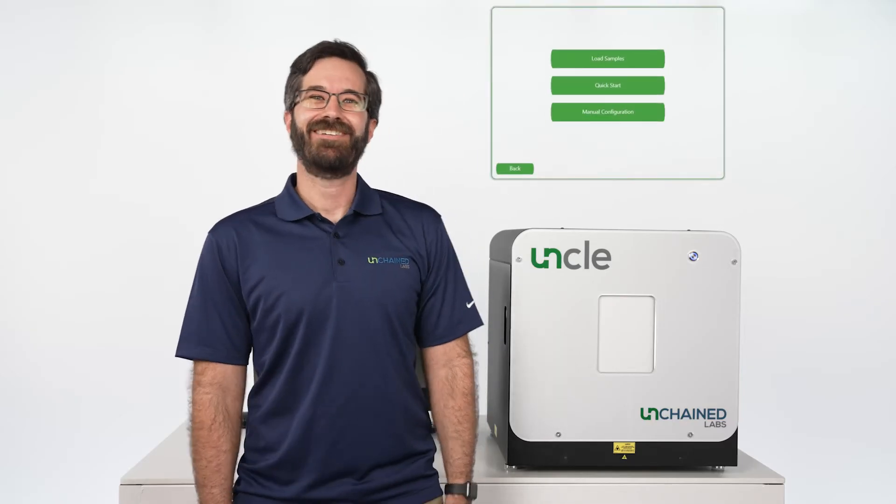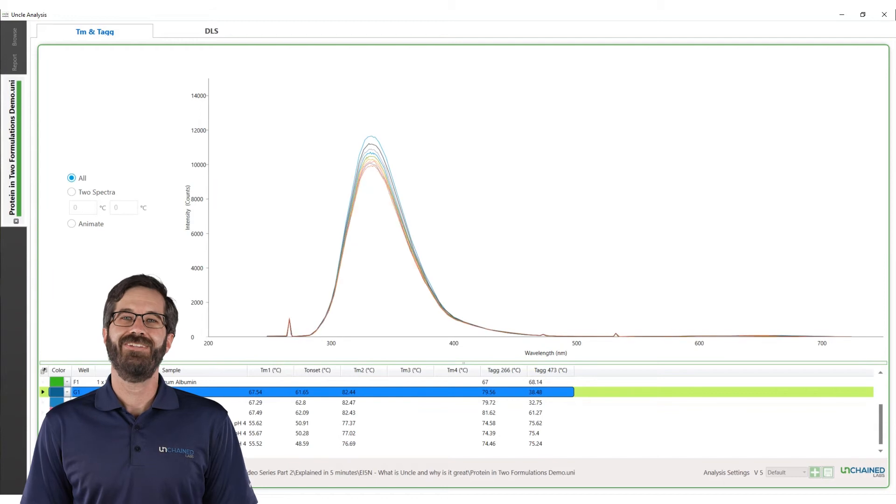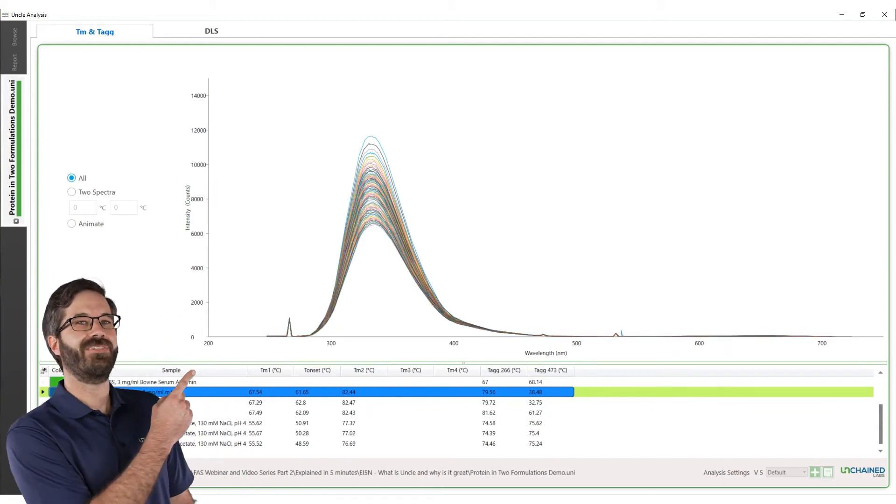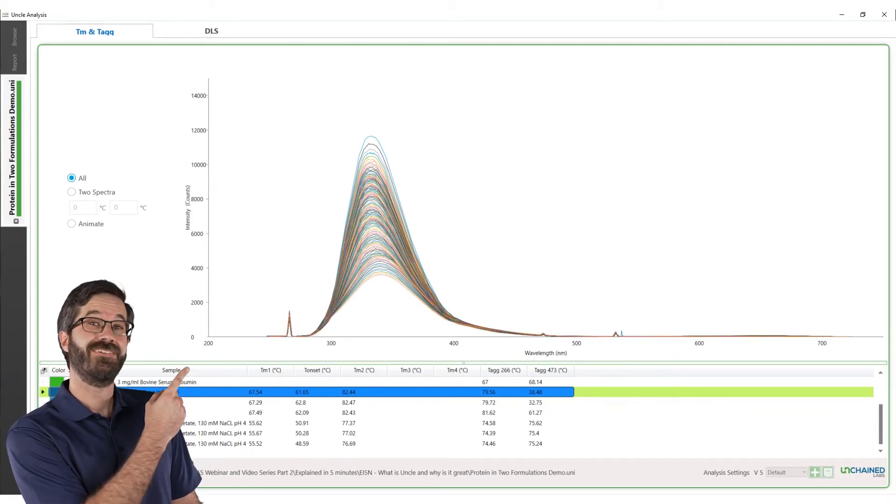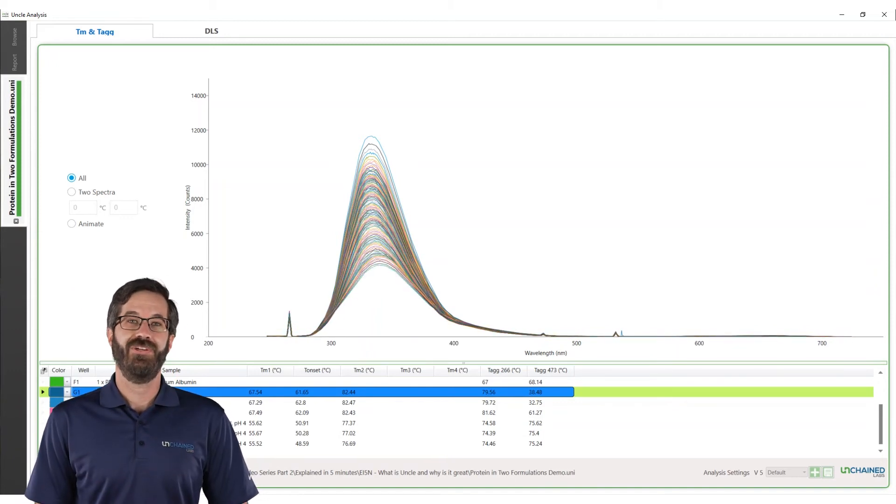Time to hit start. As UNCLE heats samples up, it reads the full-spectrum fluorescence for every sample at many temperatures. Here's exactly what that looks like when exciting a protein with a 266 nanometer laser. Each one of these lines is a full-spectrum fluorescence read at a new temperature.